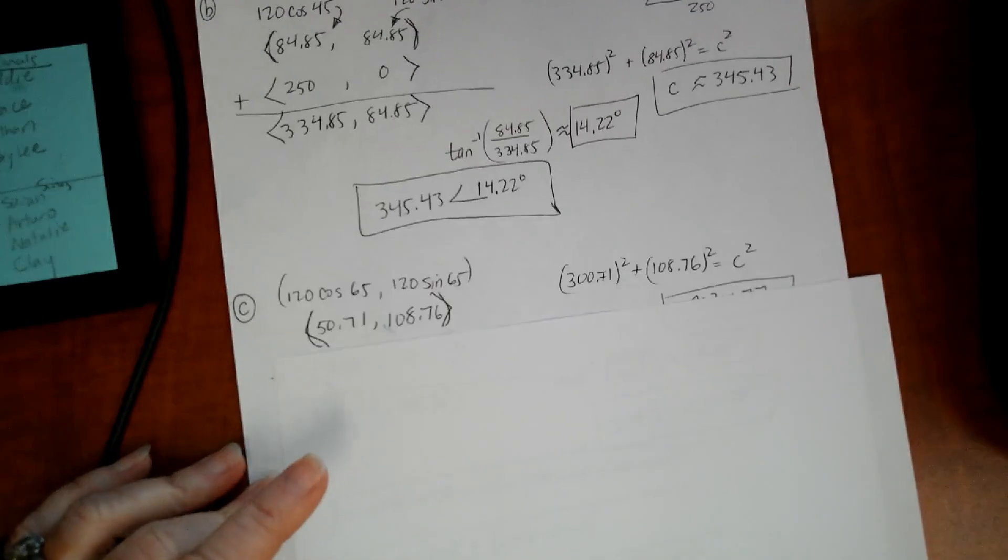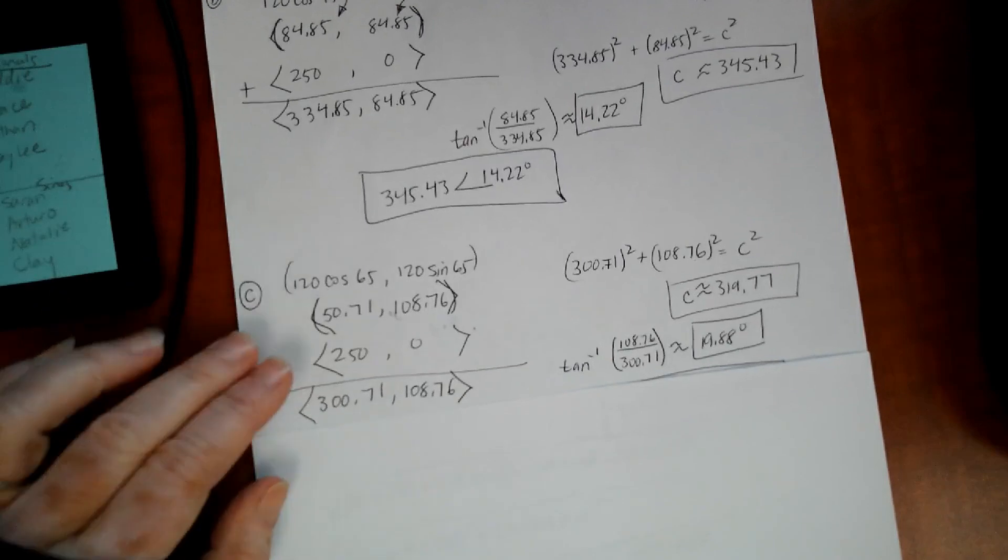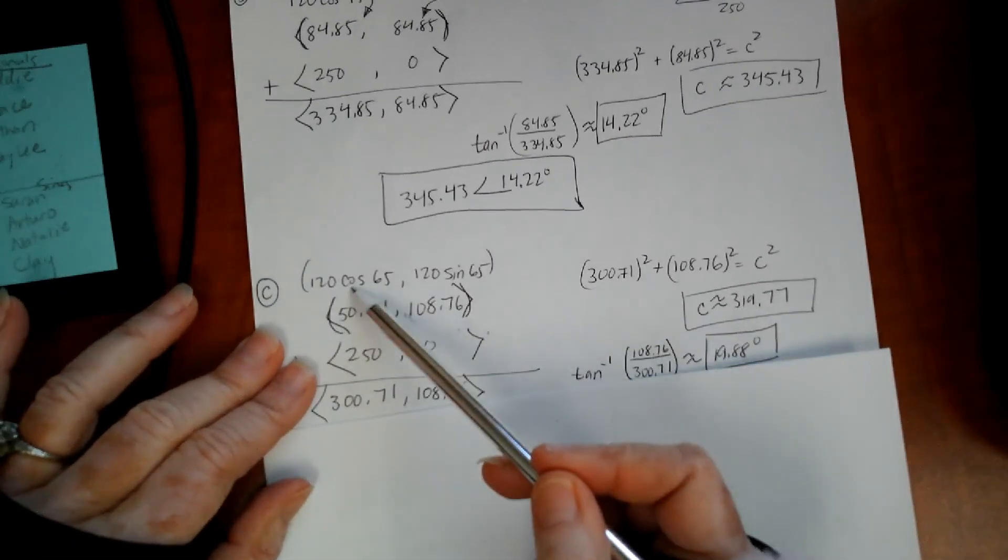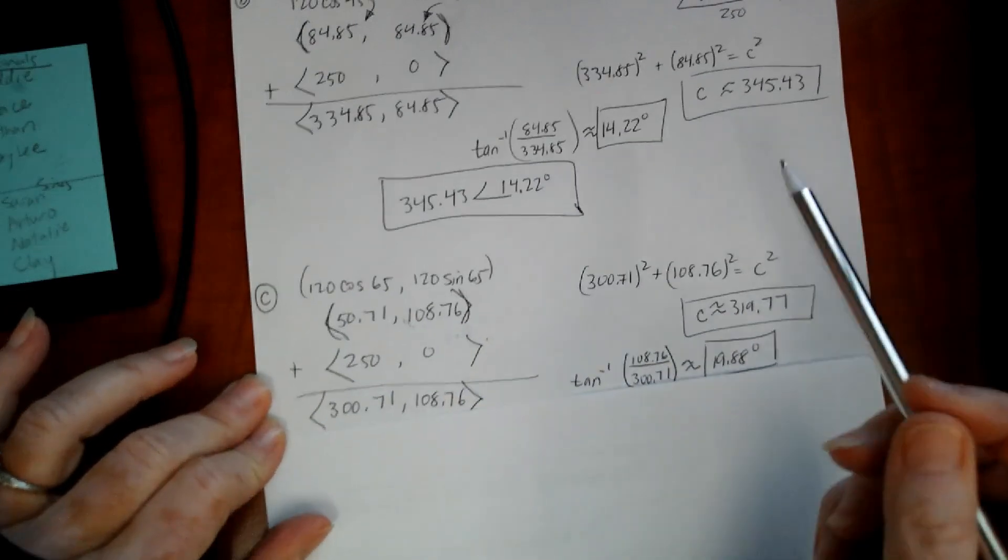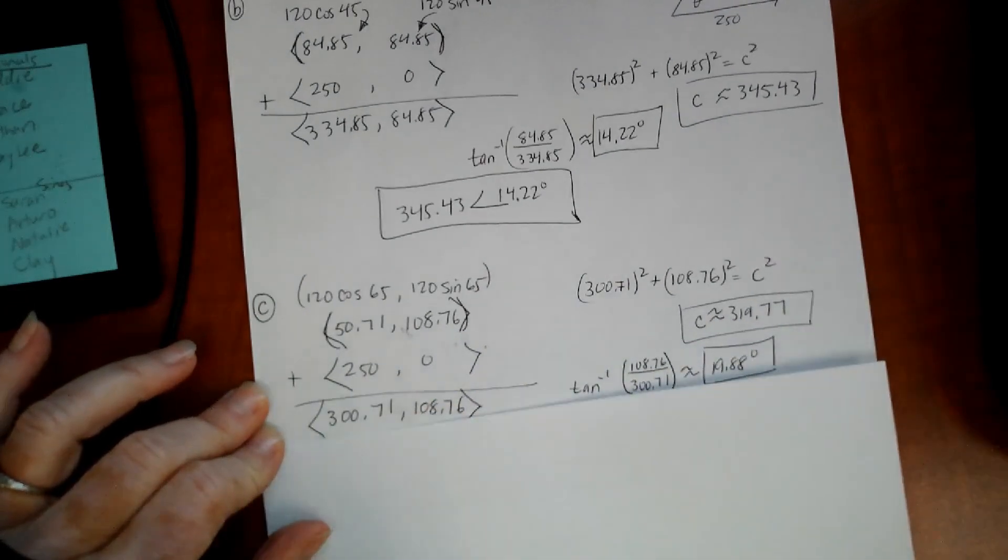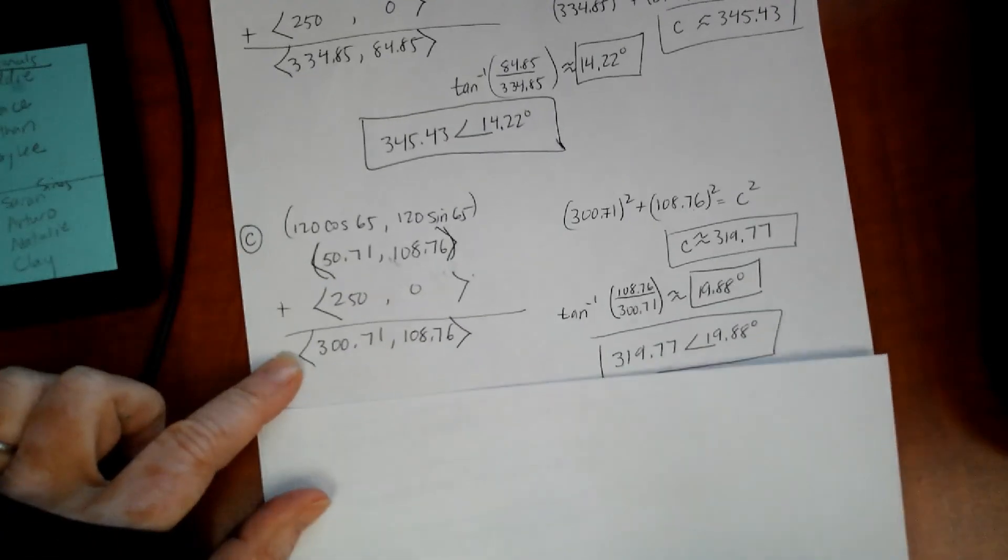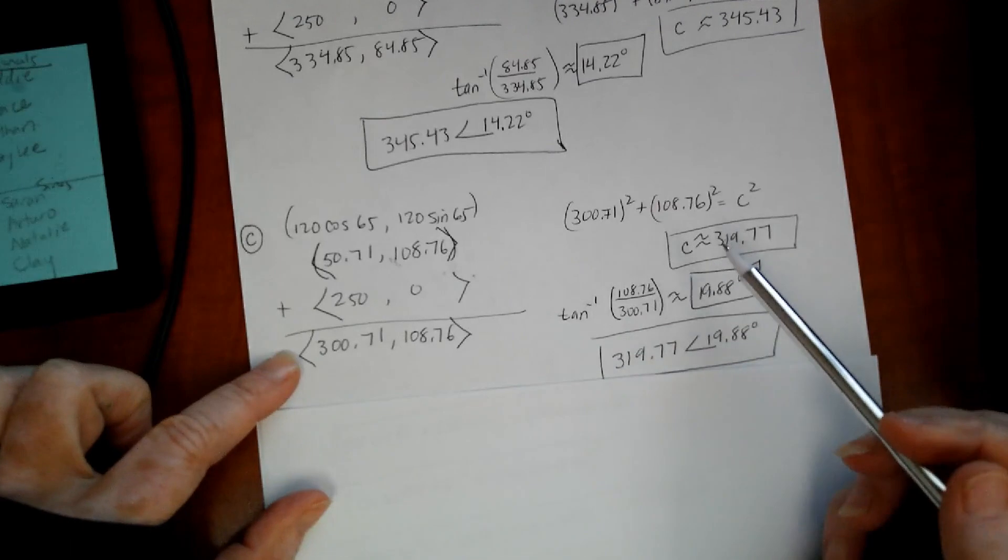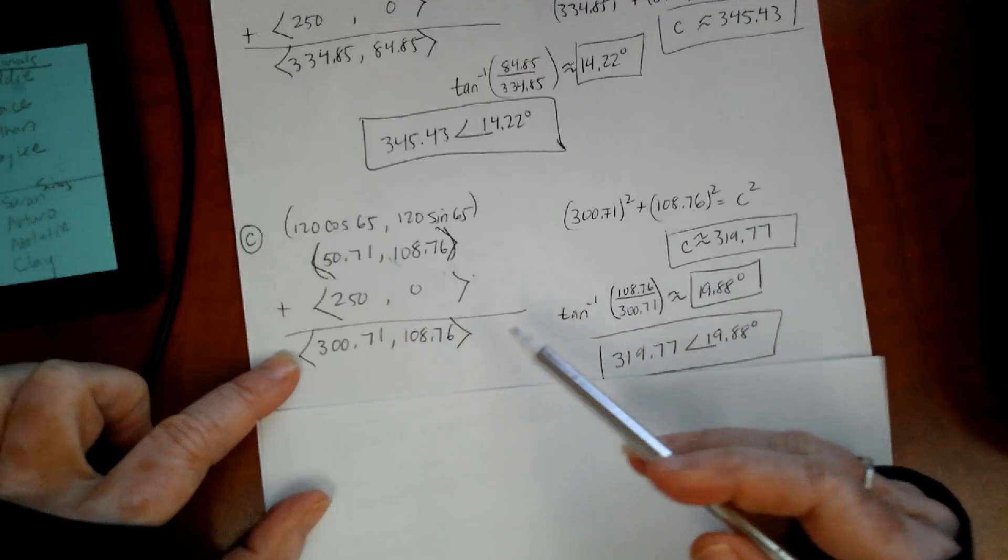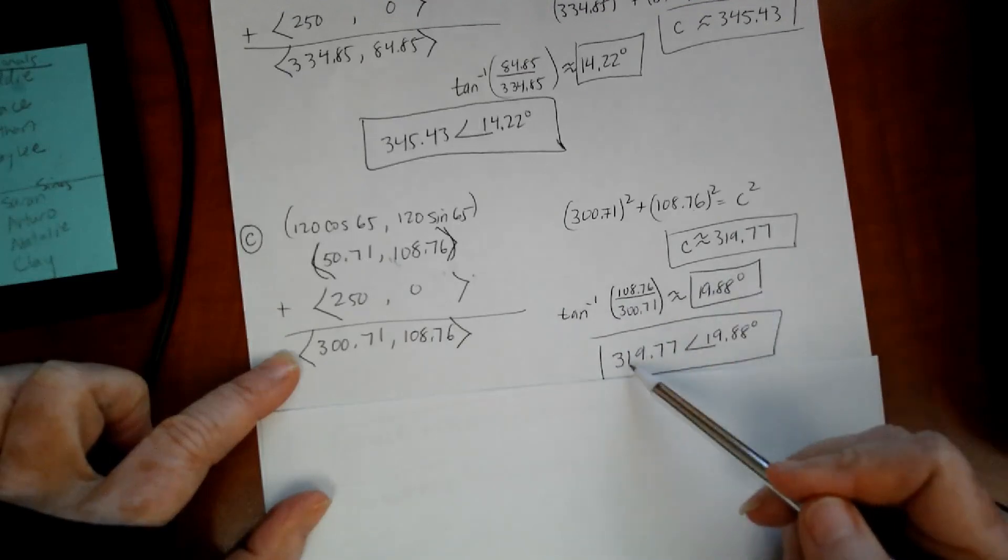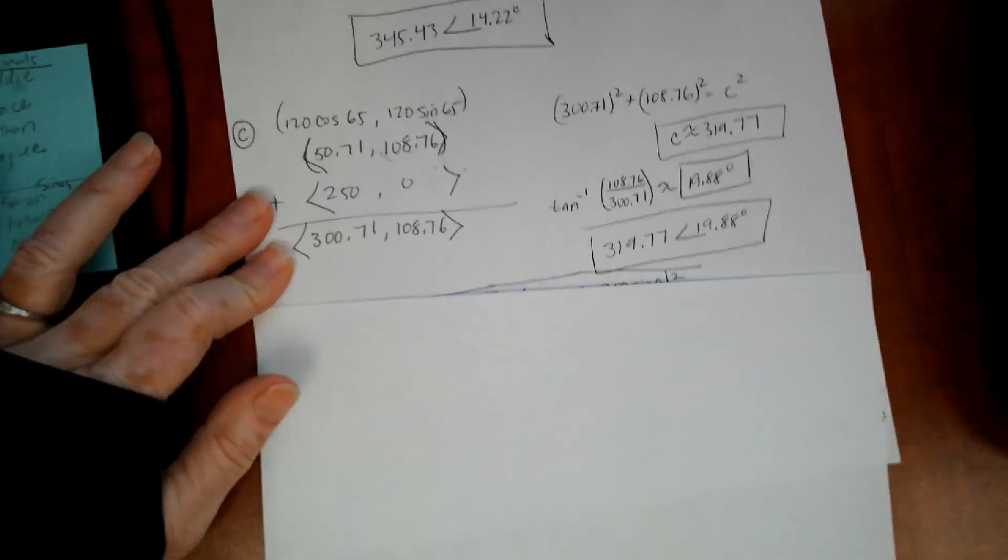On letter C, it's just the same exact routine all over again, but with 65. Horizontal component, vertical component, add it to that other vector, that one that's just a horizontal line. You get the resultant vector, and then you're going to use Pythagorean theorem to get the magnitude, and then you're going to use inverse tangent to get the direction. If you want to write it fancy, you can write it with the magnitude and then the direction. Now we're on letter D.